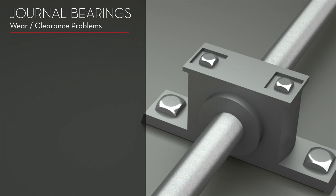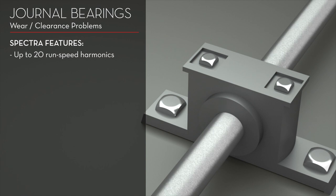Problems in journal bearings can be shown in a spectrum by an exceptional amount of run speed harmonics, sometimes up to 20.